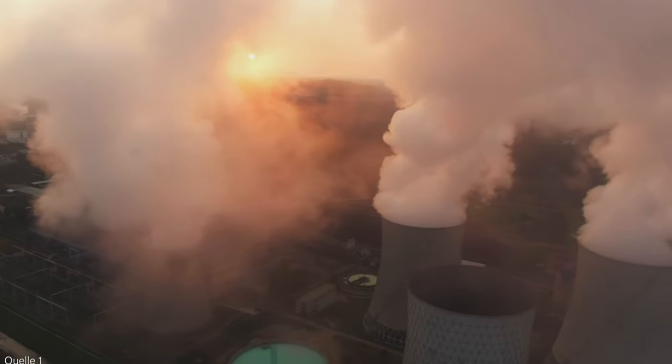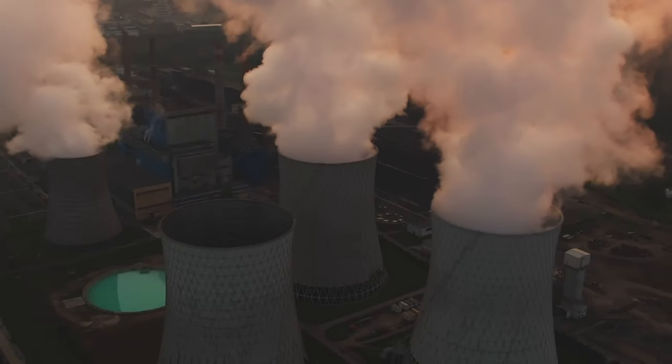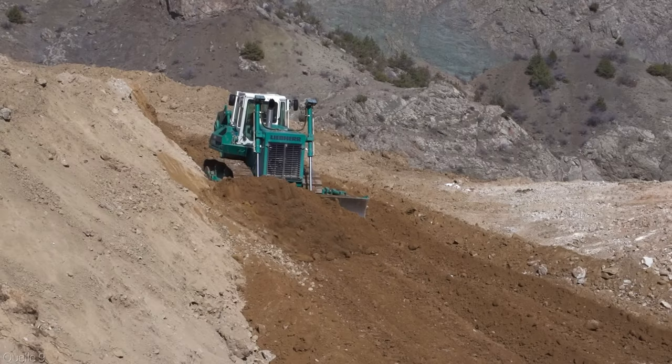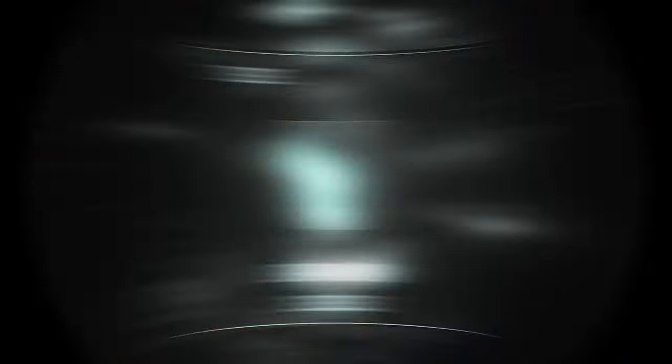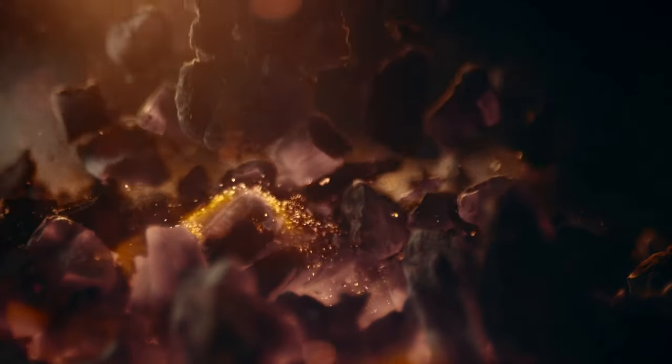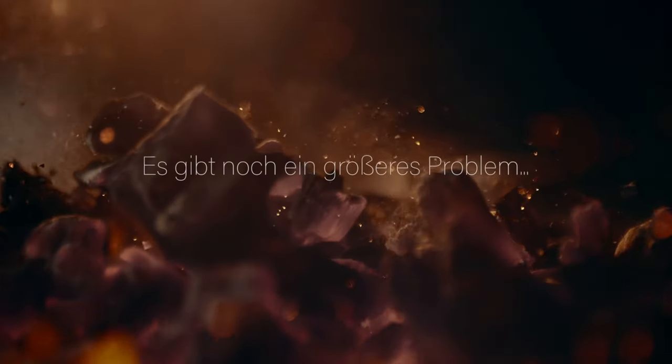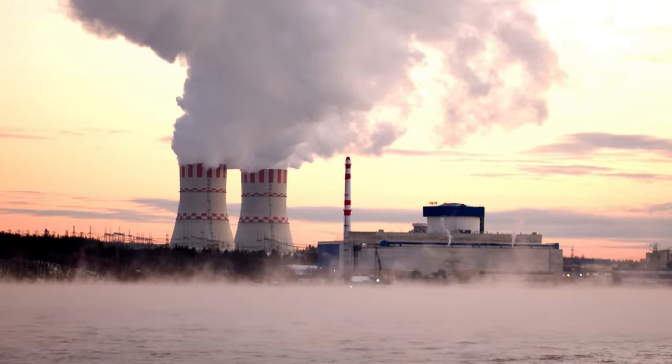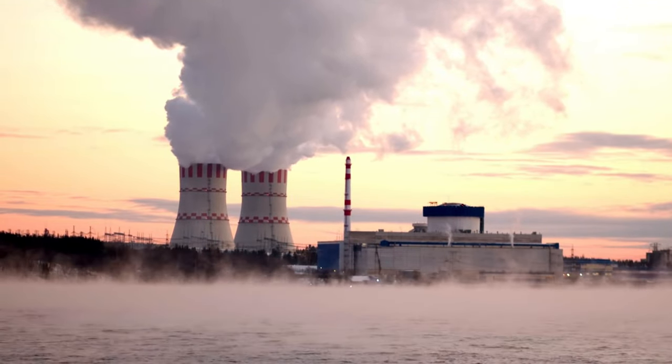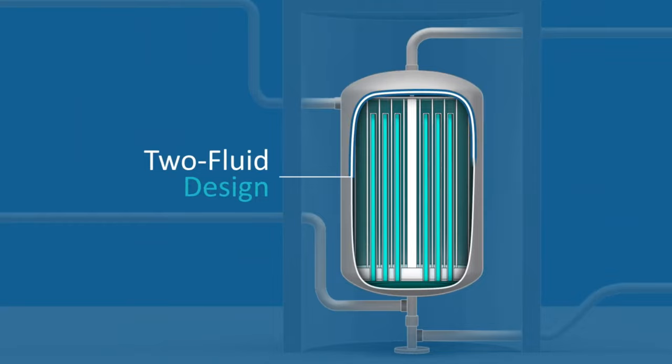So, is there a way to solve the nuclear waste problem and make nuclear energy safer, cheaper, and more sustainable? Well, this is where thorium comes in. Thorium is another element that can be used for fission, but with some remarkable advantages over uranium. Thorium is more abundant, more efficient, and less radioactive than uranium. And it can also burn up the actinides from spent nuclear fuel, reducing the amount and toxicity of nuclear waste. How is this possible? Well, to find out, we need to take a closer look at the thorium fuel cycle and how it differs from the uranium fuel cycle.